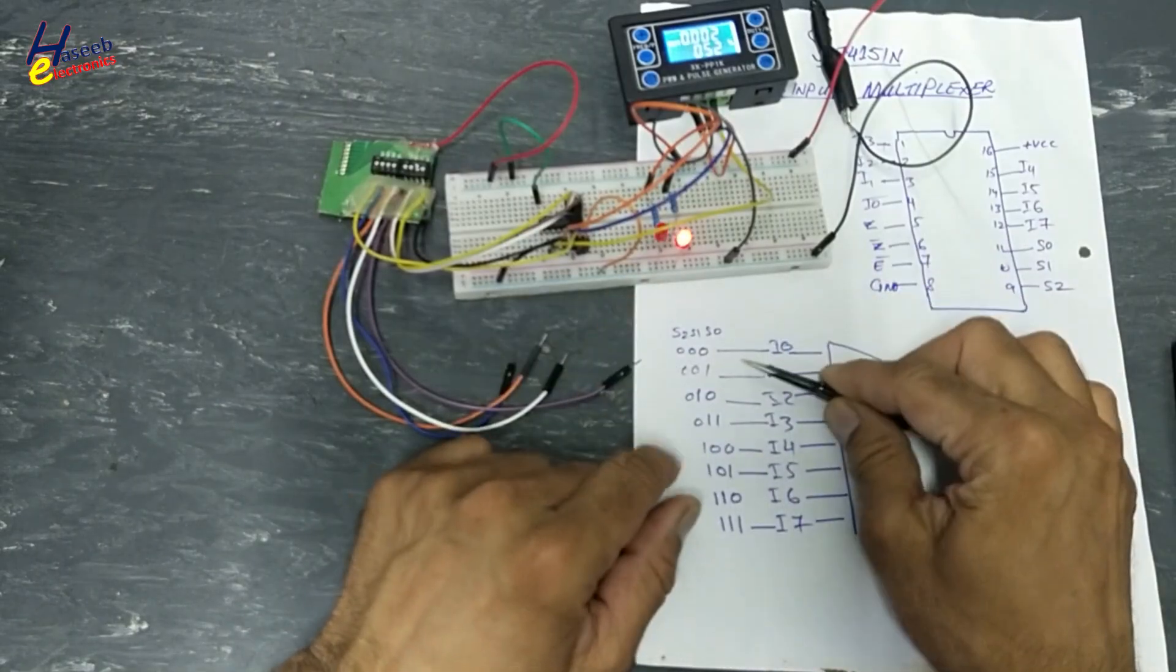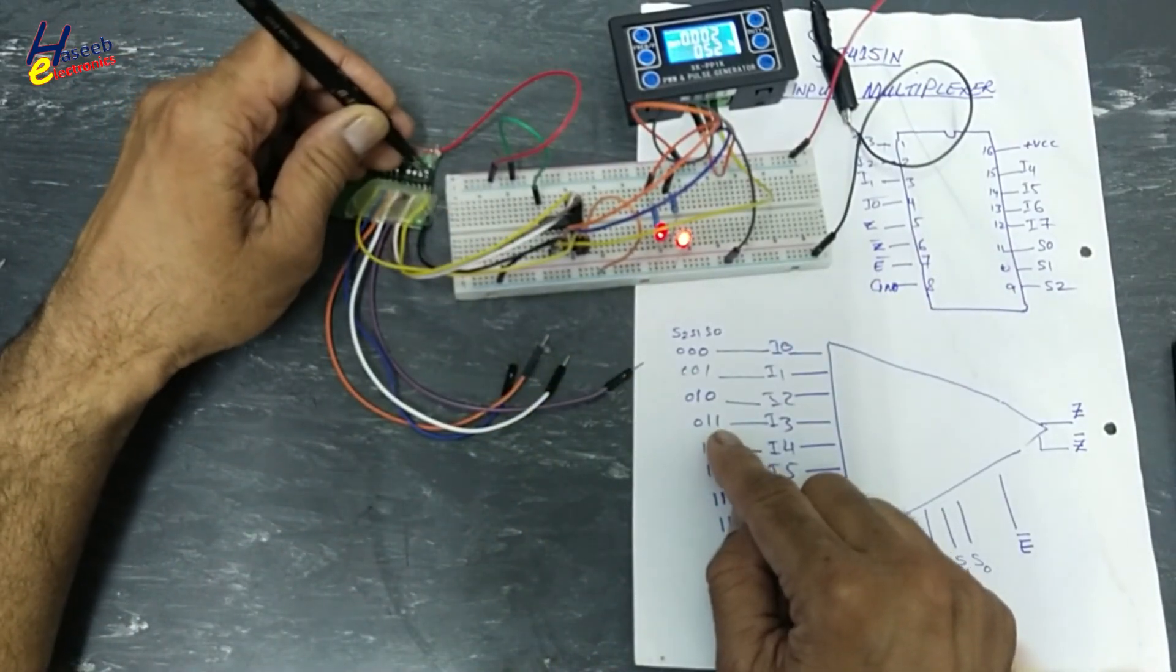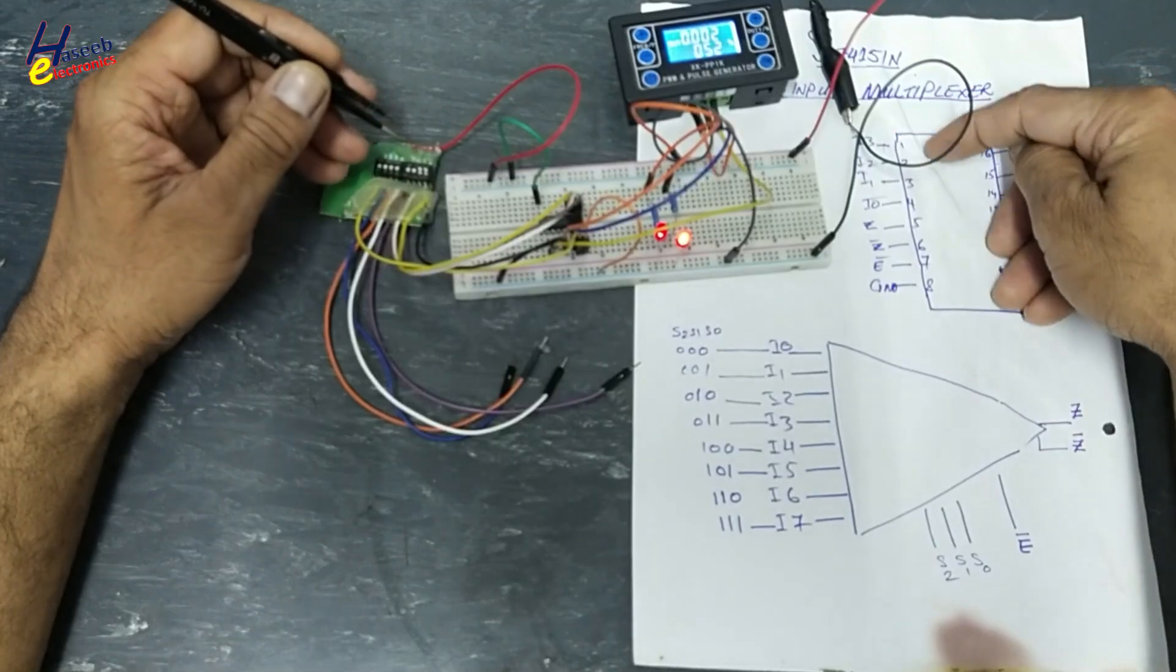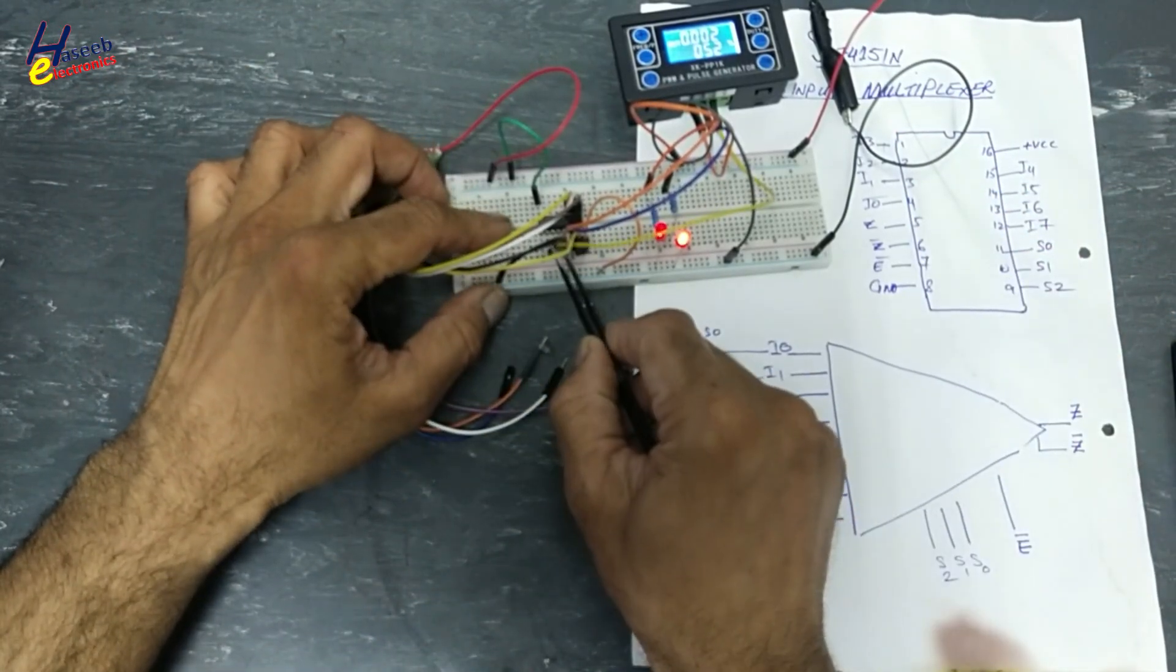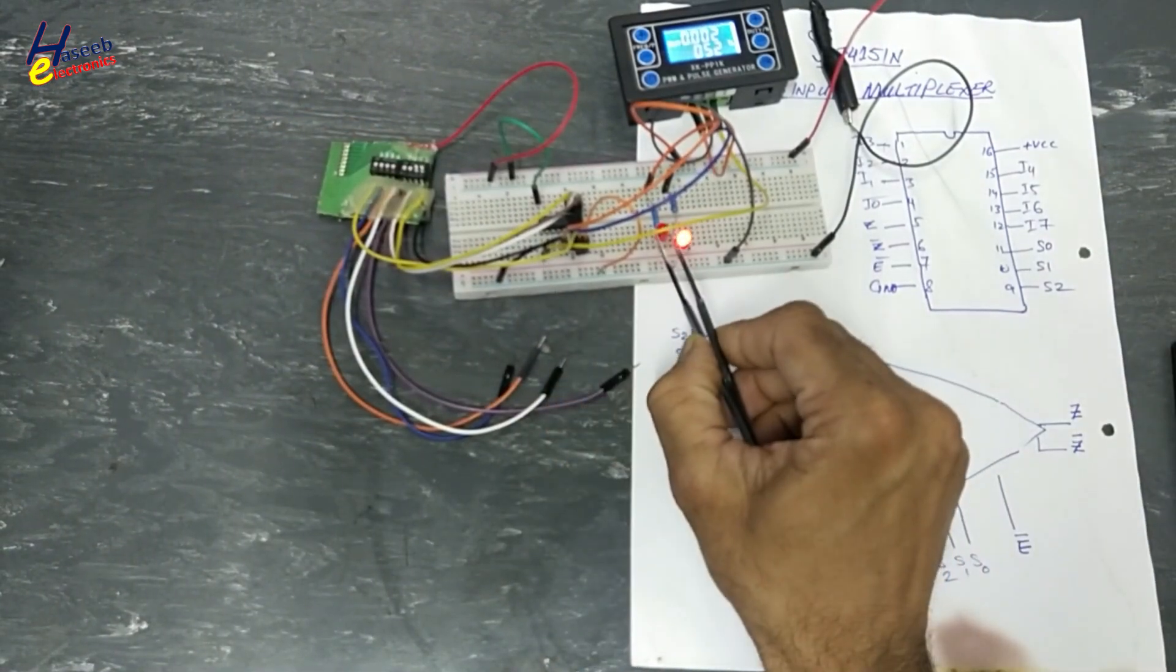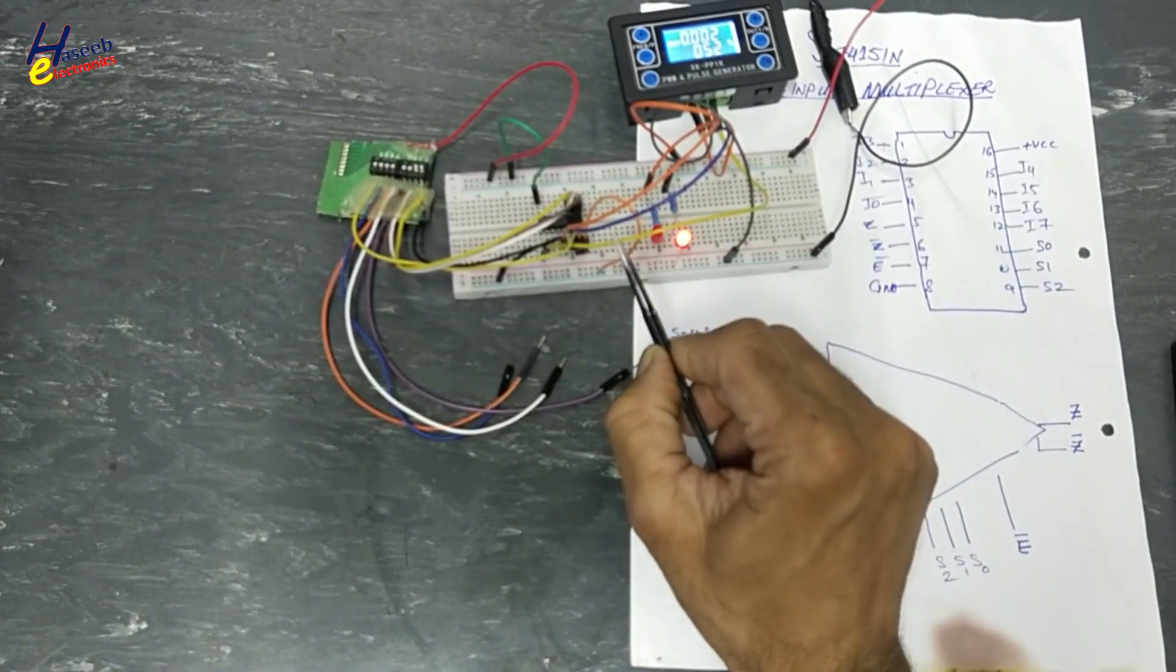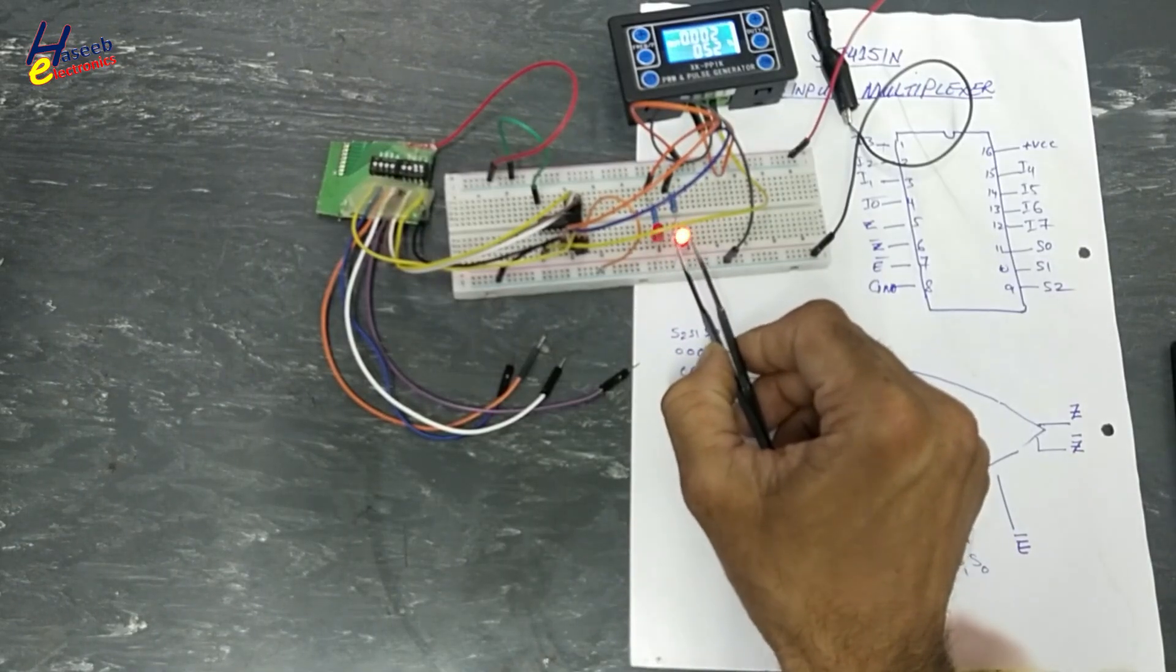Here we have just only now 0, 1, 1. I3. That means pin number 1 signal will reach to pin number 5. This is pin number 5. This is pin number 1. This signal is reaching here. When this is high, this is high. But it is opposite. Complement signal.